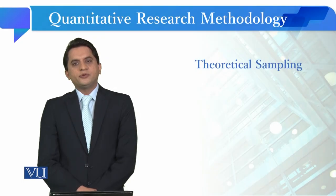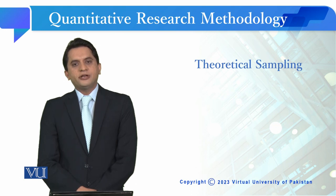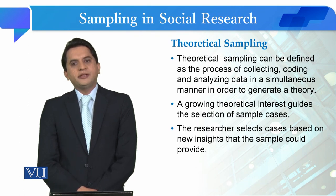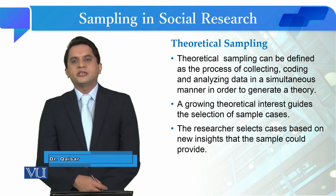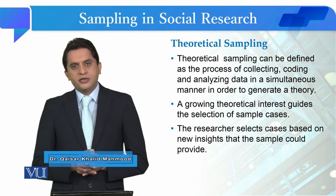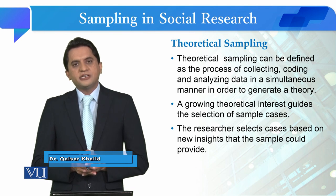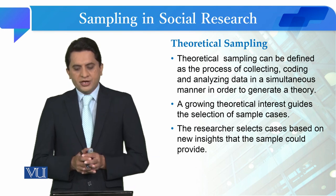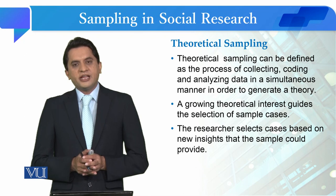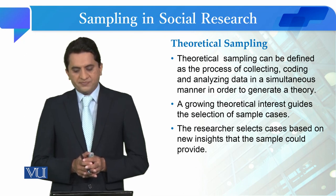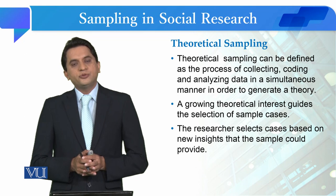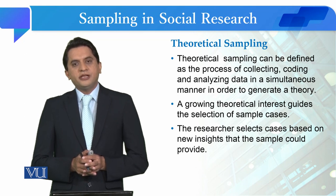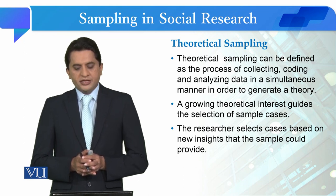Students, we will talk about non-random sampling, and in this module we will look at theoretical sampling. Theoretical sampling most of the time is gathered in grounded theory. Theoretical sampling is a type of sampling in which we collect, code, and analyze the data in order to generate a theory. In social sciences, particularly in the 21st century, there is a growing interest in this type of sampling.